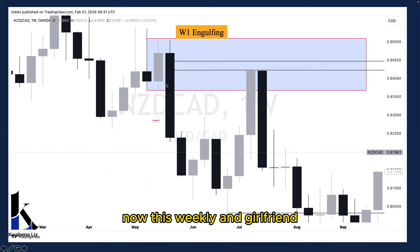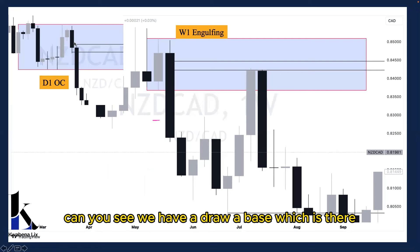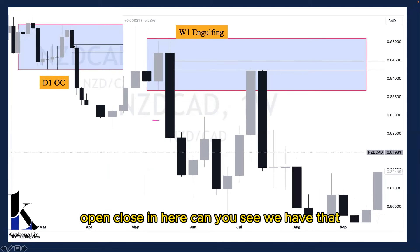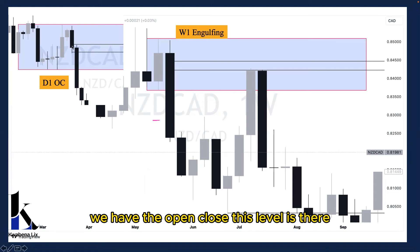Now, this weekly engulfing — on the daily, can you see we have a drop, a base, which is the open close in here, can you see? We have that, we have the open close, this level is there.